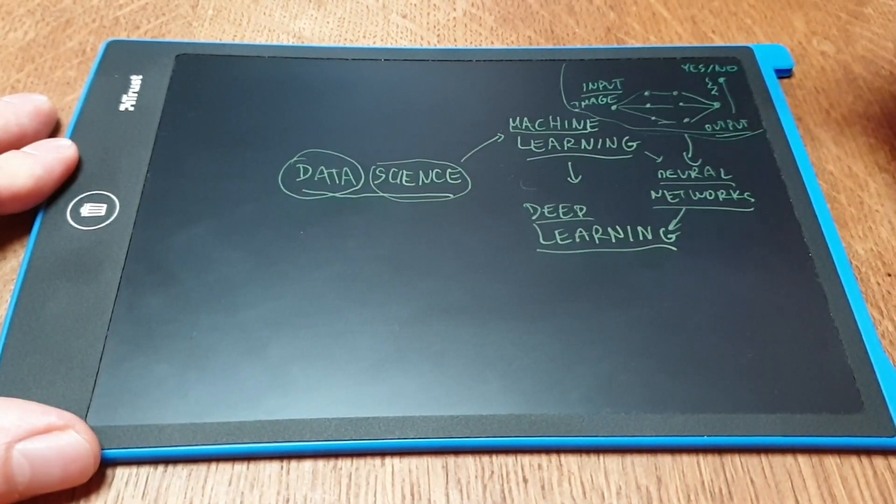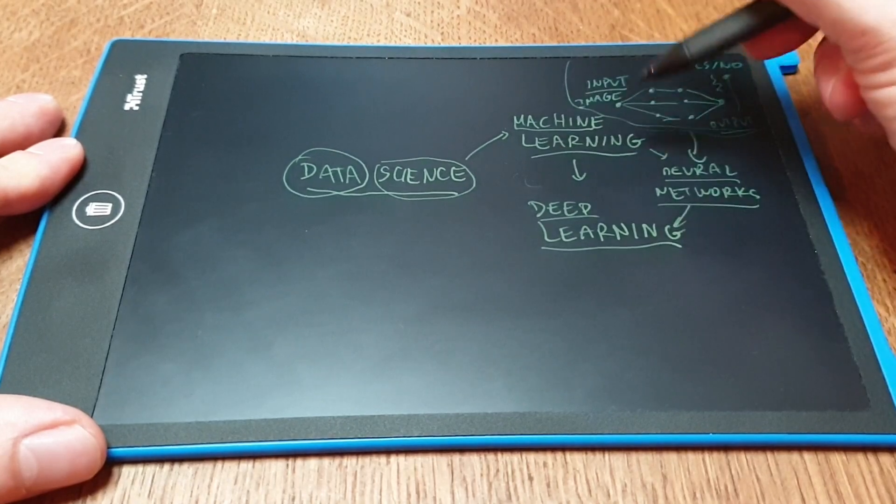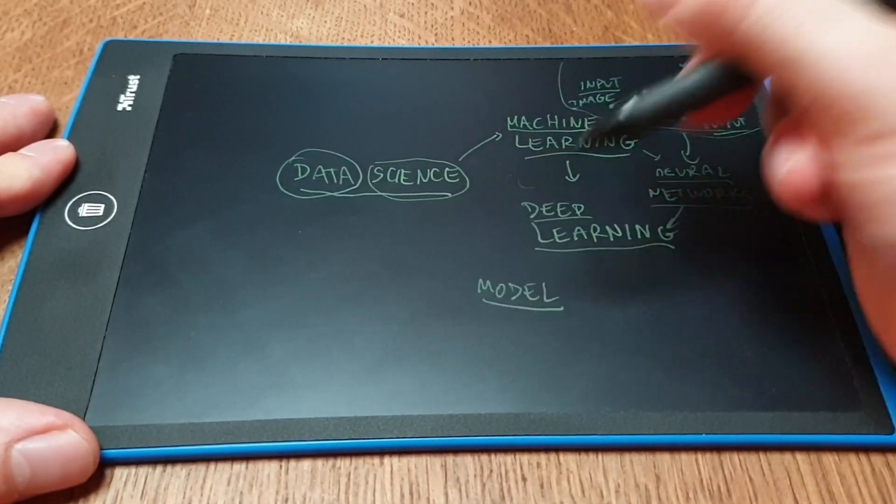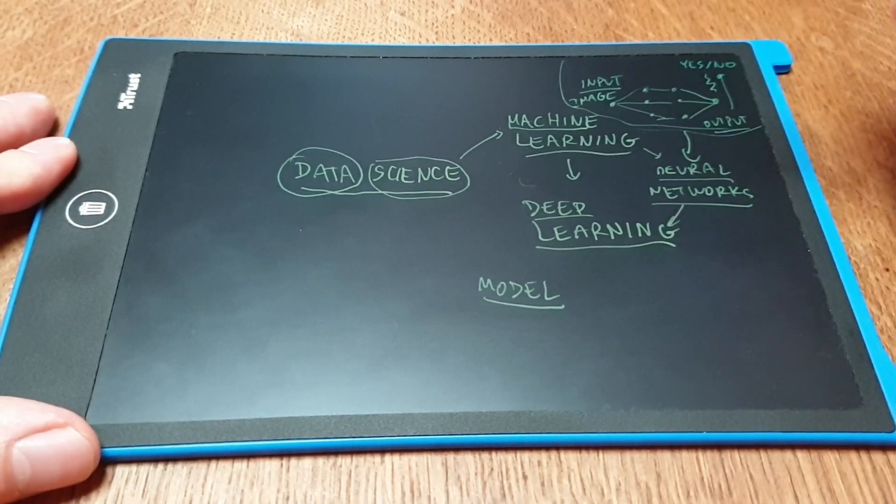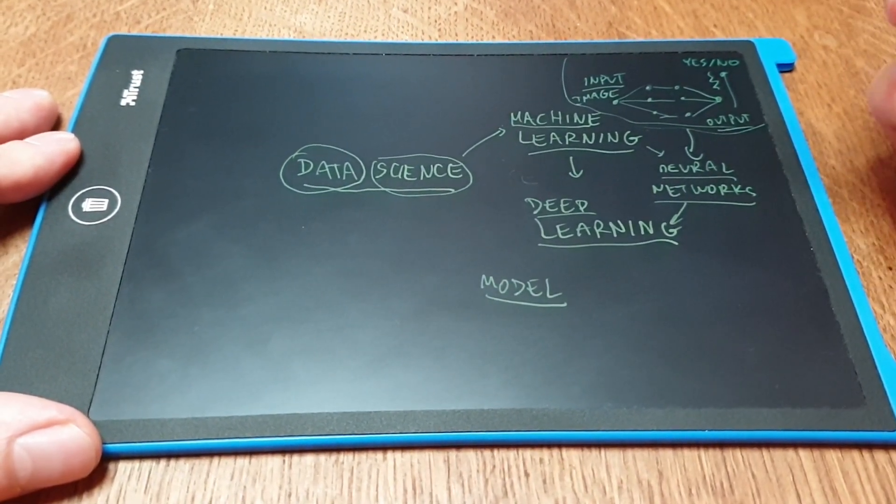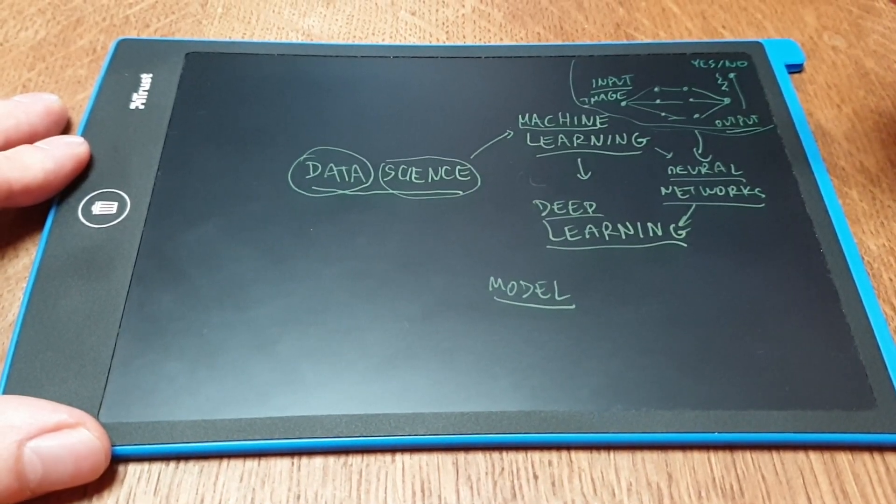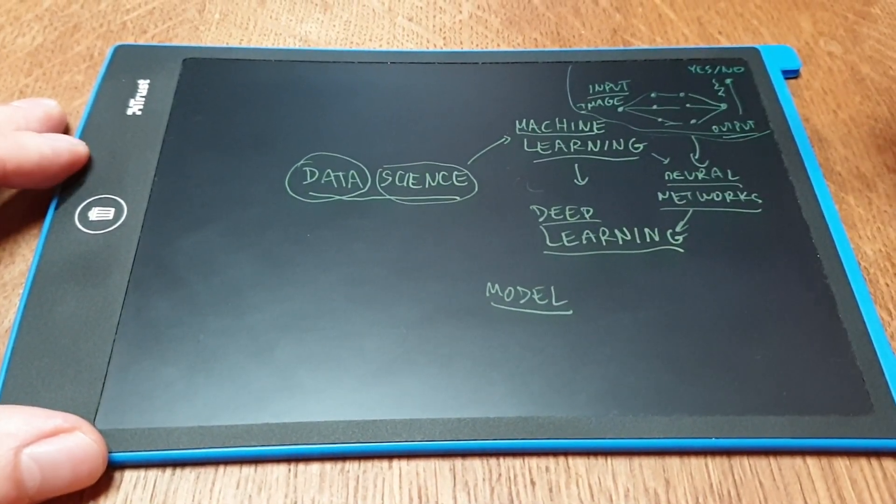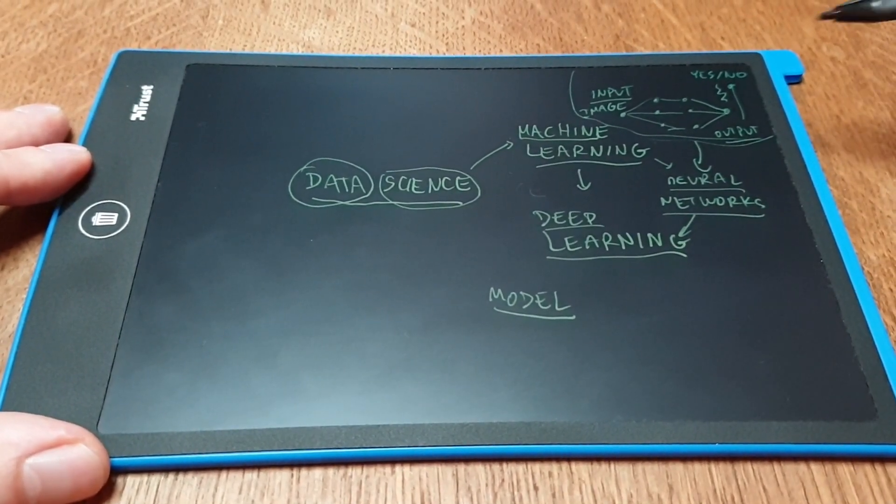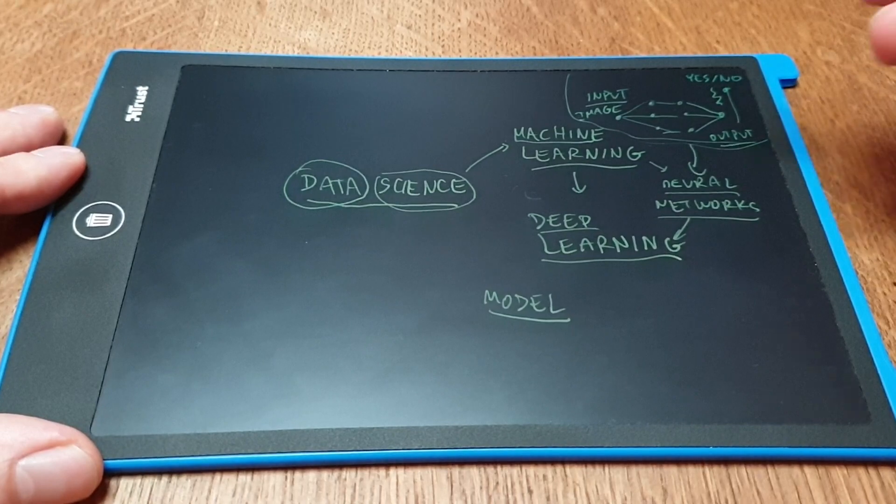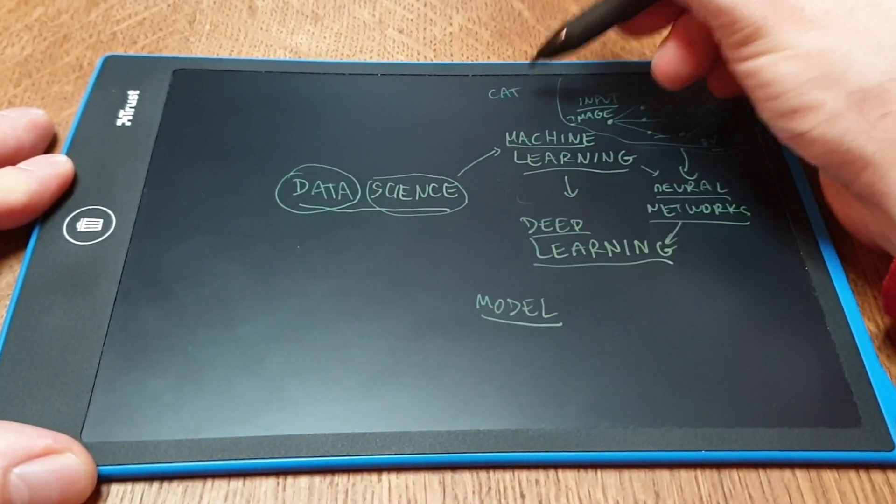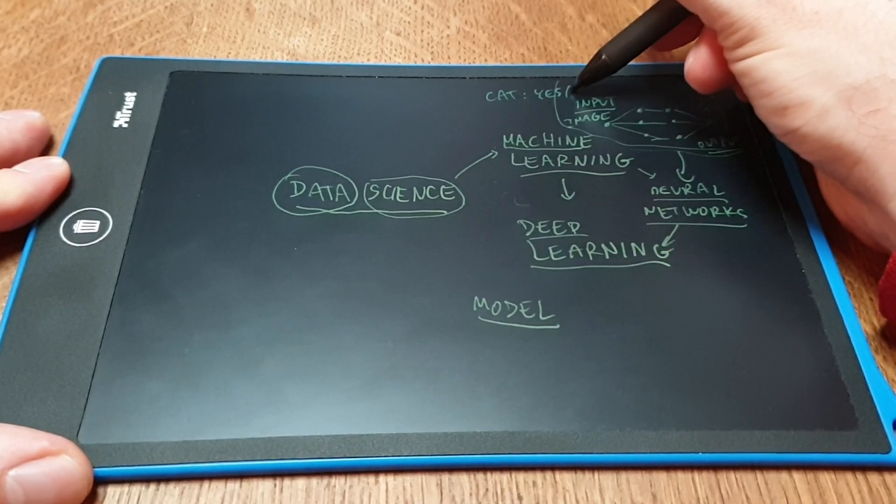So when we talk about data science and machine learning, we have a term of a model. So model is as in modeling something. We're trying to have a simplified vision of what we're trying to achieve, and build an architecture, build an algorithm, which would give us an output we would like to do. So a model in this case, if we want to say cat, yes or no,